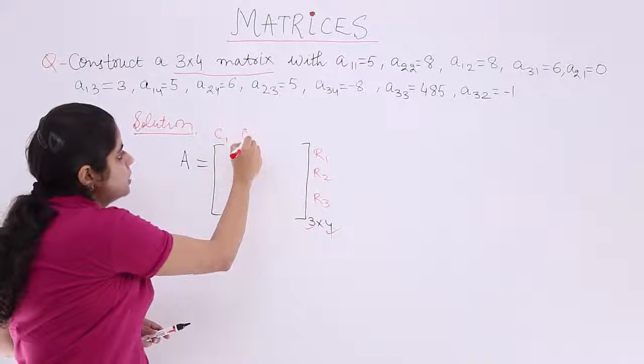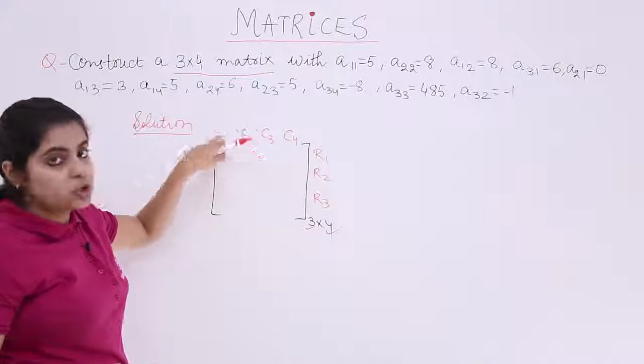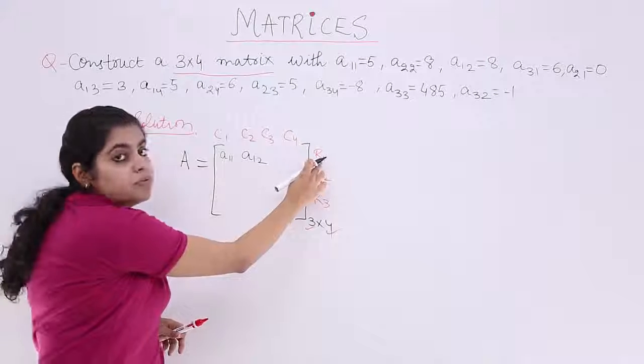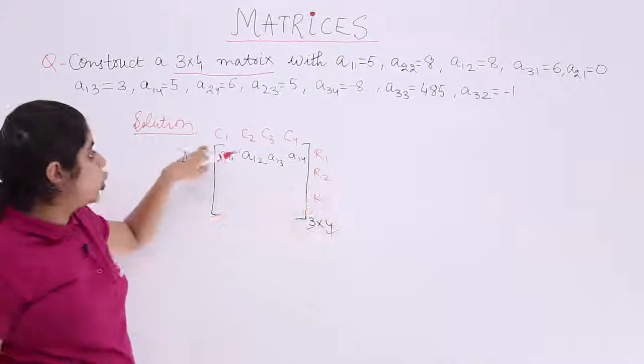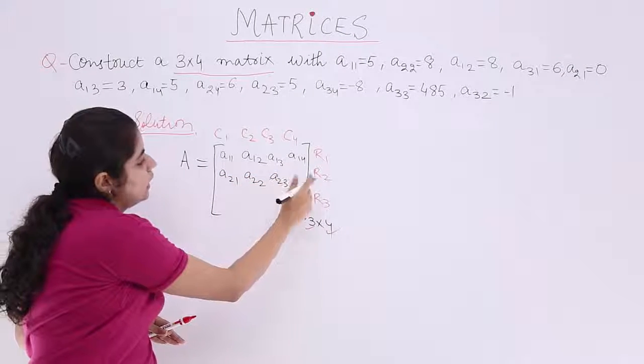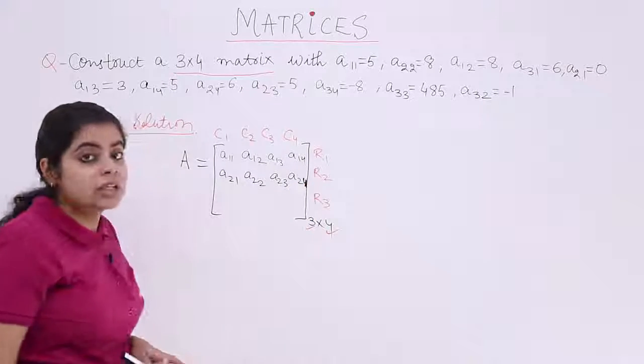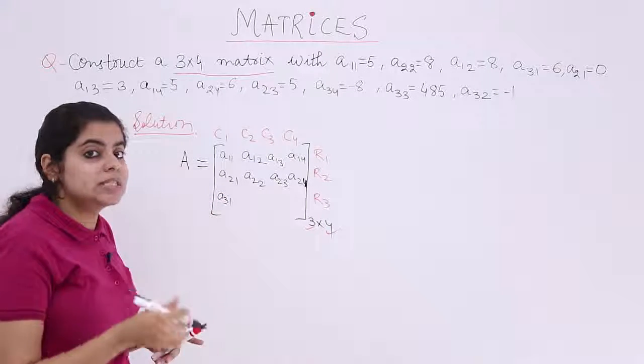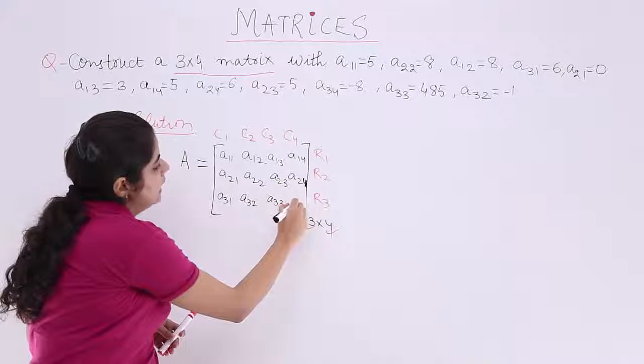4 columns. So, C1, C2, C3, C4. Now, 1st row 1st column is A11. 1st row 2nd column is A12. 1st row 3rd column A13 and A14. Similarly, 2nd row 1st column is A21, A22, A23 and last but not the least 2nd row 4th column A24. This is how we go about it. Next, 3rd row, 3rd row 1st column A31. 3rd row 2nd column A32 then A33 then A34.